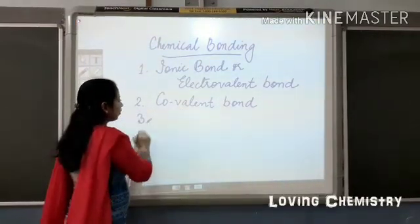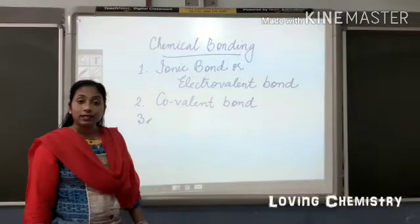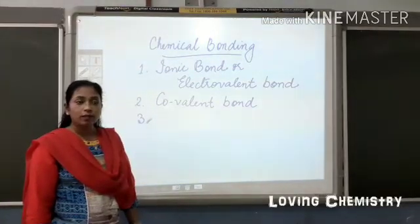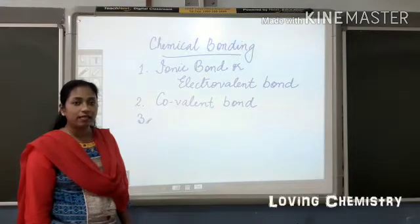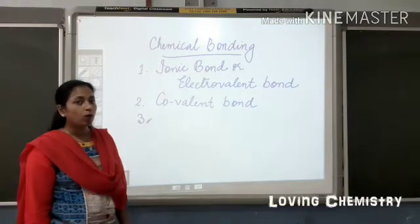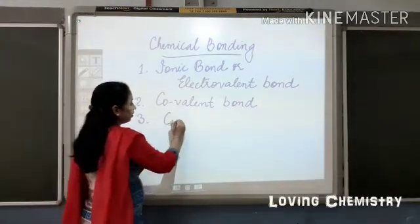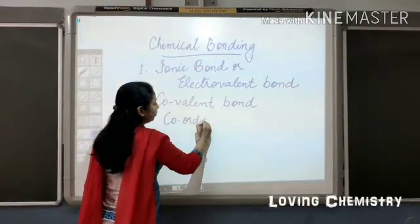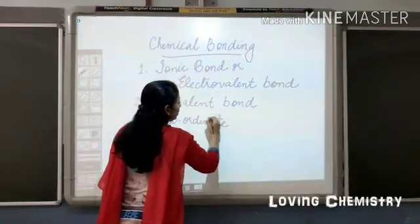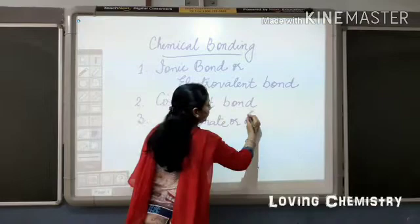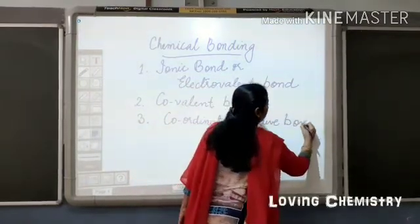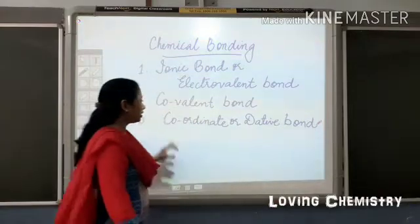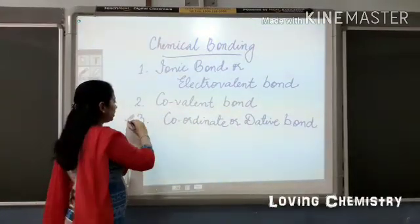The third type of bond or the third method by which an atom can obtain stability is by forming coordinate bond or dative bond. Now this is something new which we have to study this year.